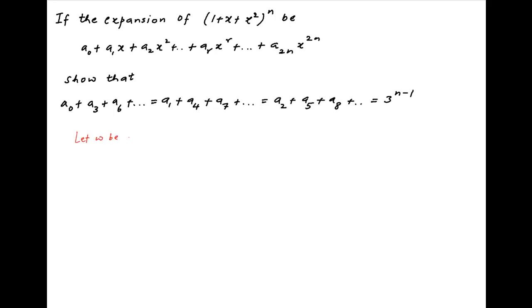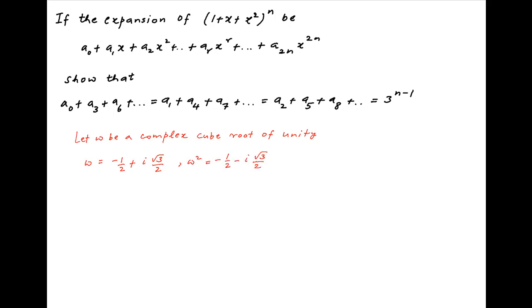Let's start by assuming that omega is a complex cube root of unity. Therefore, omega is equal to minus half plus i times root 3 upon 2, and omega square is equal to minus half minus i times root 3 upon 2. We know that 1 plus omega plus omega square is equal to 0, and omega cube is equal to 1.